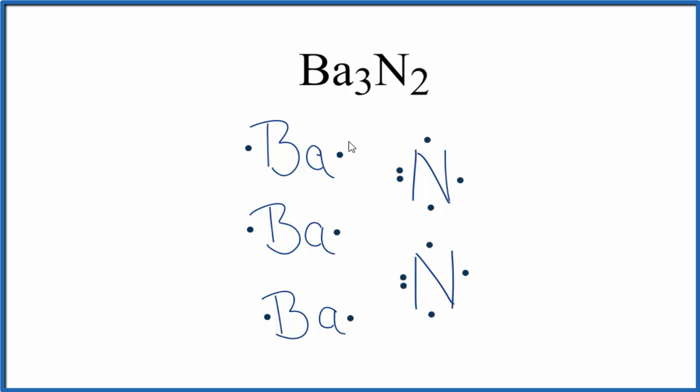So now we'll move electrons. We'll transfer electrons from the barium to the nitrogen. Each nitrogen has five. If we can get eight for each nitrogen, that'll be an octet. That'll be very stable.